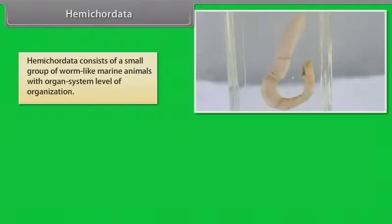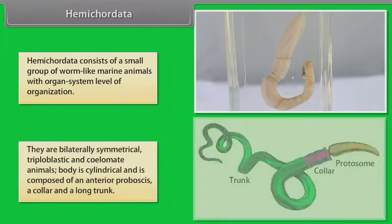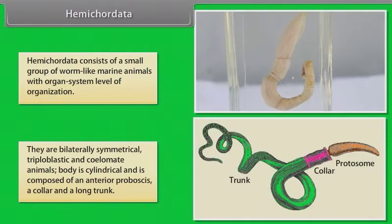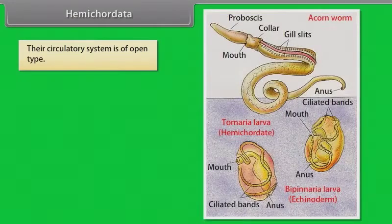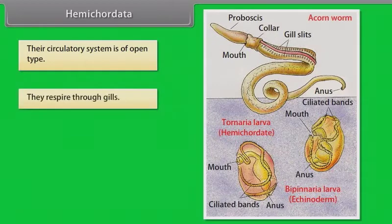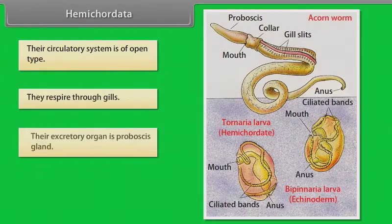Hemichordata consists of a small group of worm-like marine animals with organ system level of organization. They are bilaterally symmetrical, triploblastic and coelomate animals. The body is cylindrical and is composed of an anterior proboscis, a collar and a long trunk. Their circulatory system is of open type. They respire through gills.